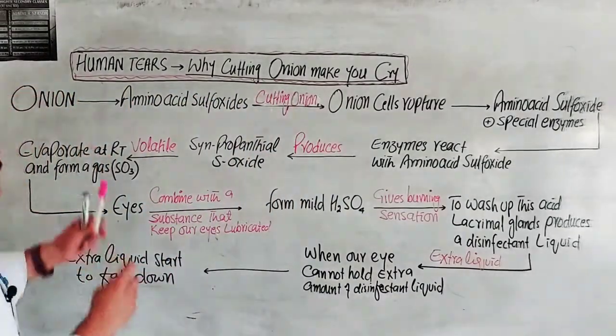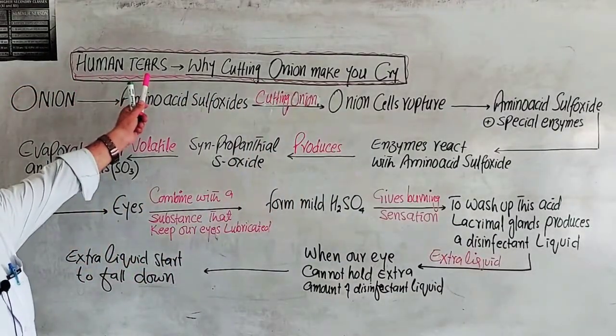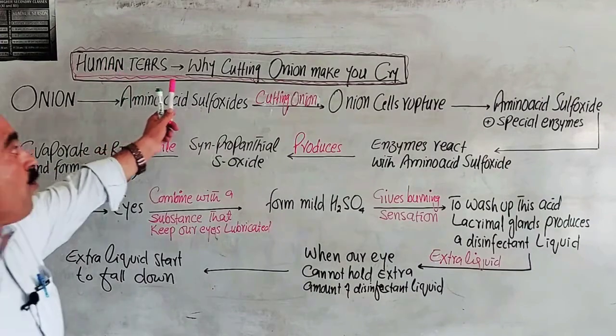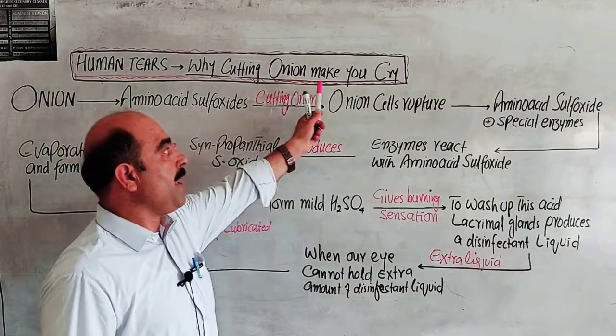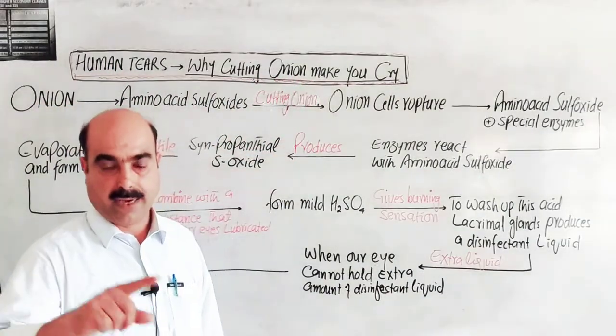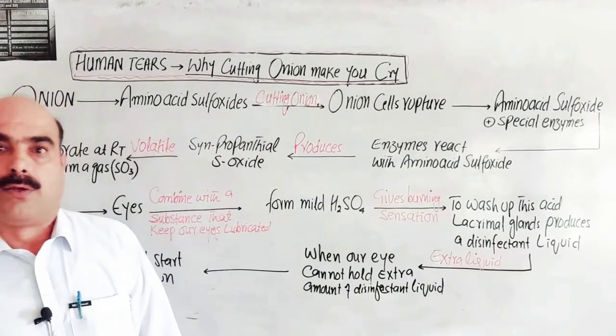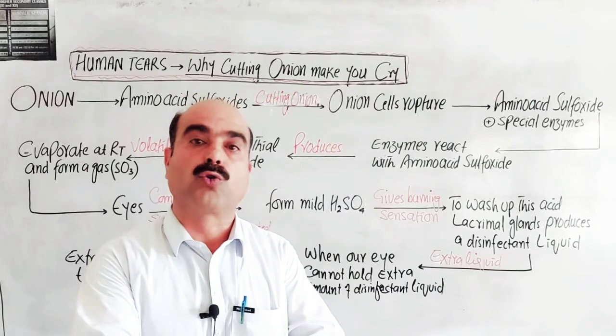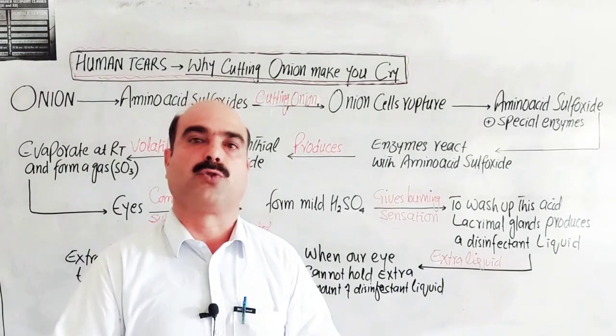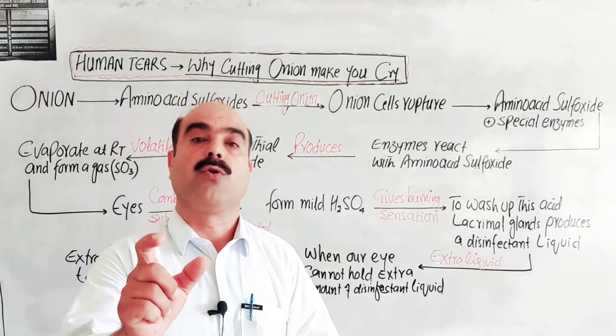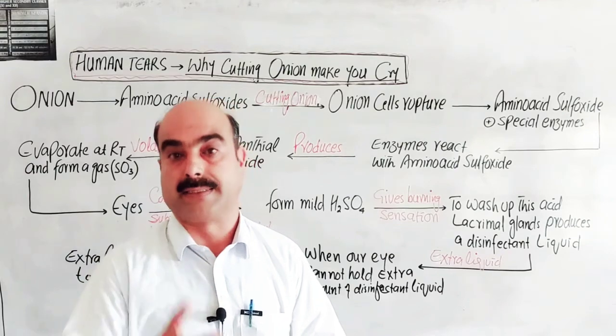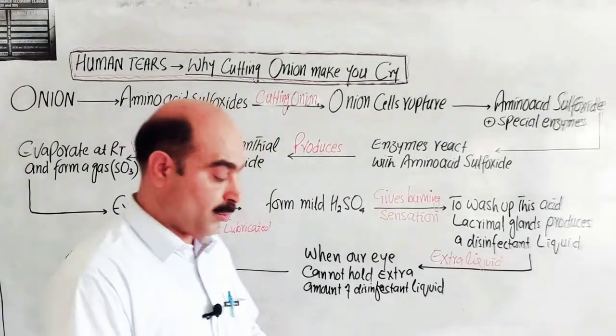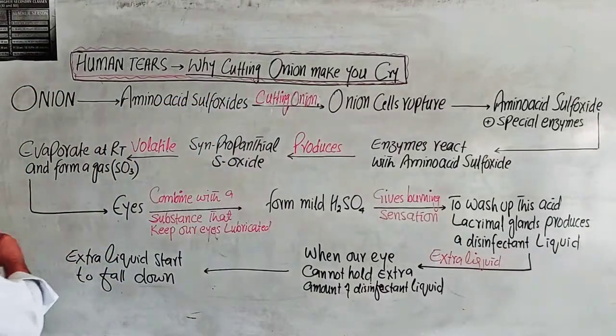Let's start students. The topic is human tears. What are human tears? Why cutting onion makes you cry? When you cut onion, why do your eyes water and you feel a burning sensation? Now let's start.